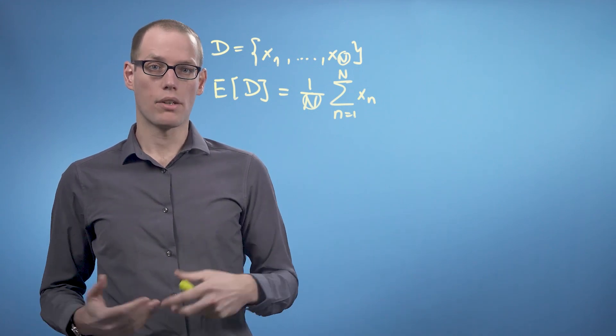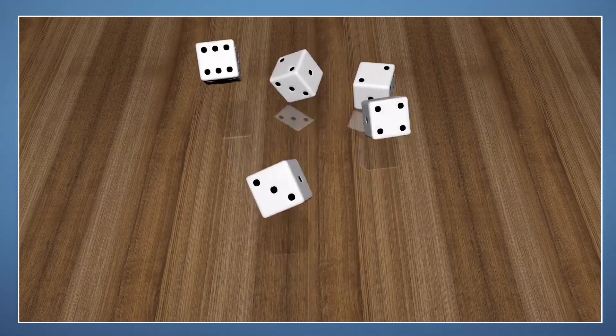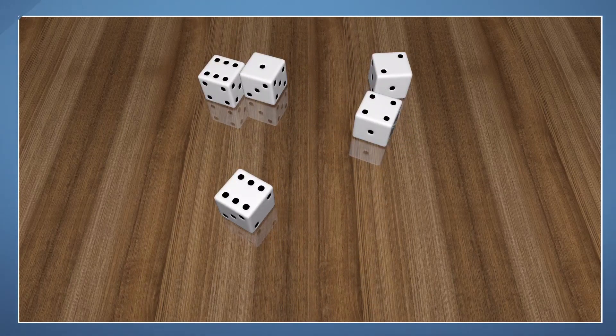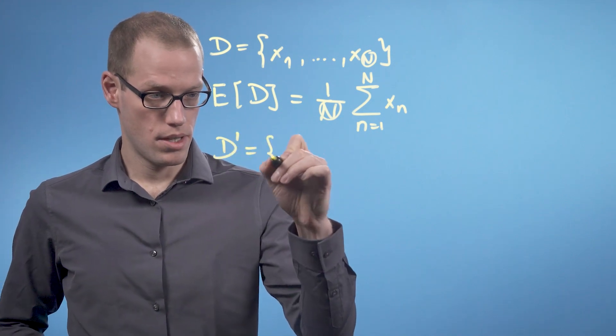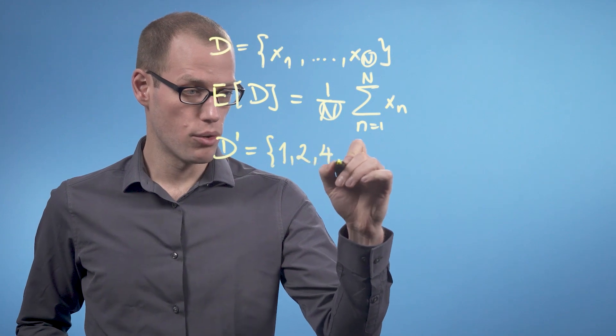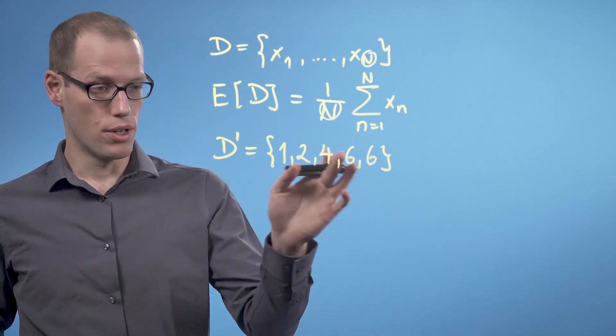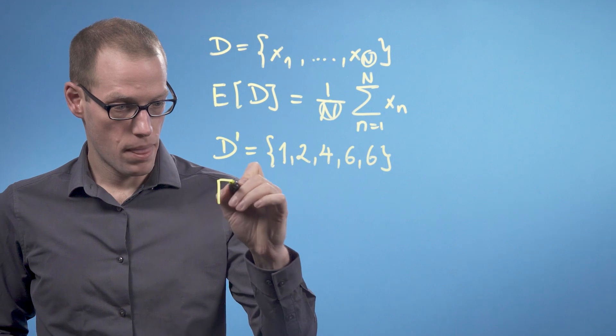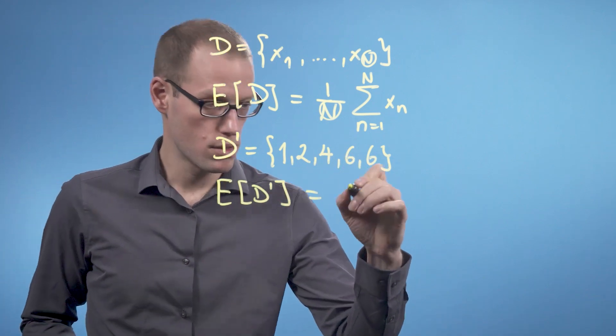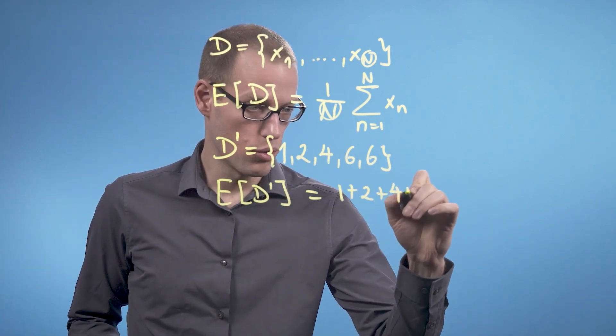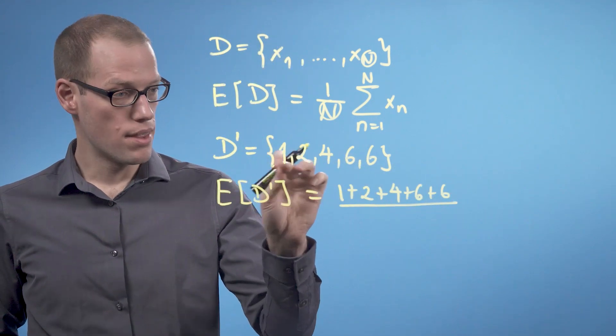Let's look at an example. I create a dataset consisting of the five numbers that I get when I roll five dice. We got 1, 2, 4, 6 and 6. So let's write this down. We're going to call this D' is {1, 2, 4, 6, 6}. And now the expected value or the average of this dataset is the sum of all elements in this dataset. So this is 1 plus 2 plus 4 plus 6 plus 6 divided by the number of elements in our dataset, and that is 5.